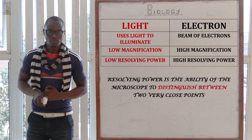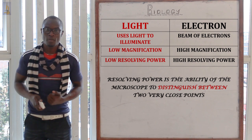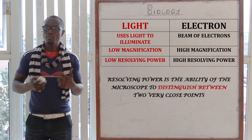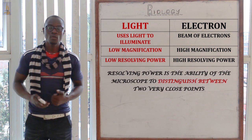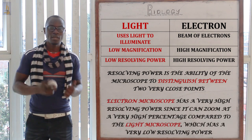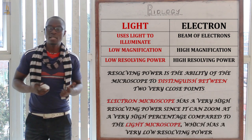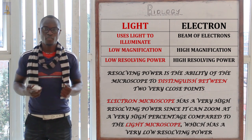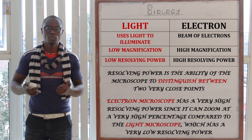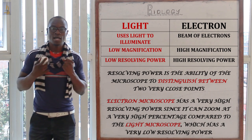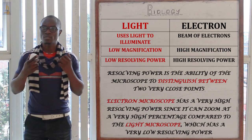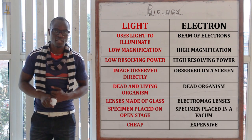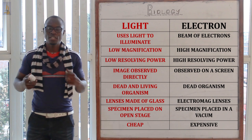The light microscope has very low resolving power while the electron microscope has very high resolving power. Resolving power is the ability to distinguish between two very close points. The electron microscope's resolving power is very high because it can zoom at a very large magnitude compared to the light microscope.